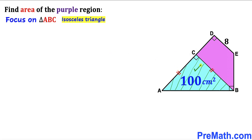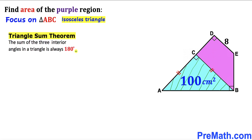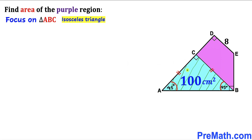Let's focus on the blue triangle ABC. This is an isosceles triangle since side length AC equals side length BC. Furthermore, it is a right triangle since this angle is 90 degrees. Recalling the triangle sum theorem — the sum of three interior angles is always 180 degrees — therefore these two base angles are each 45 degrees and the right angle is 90 degrees.